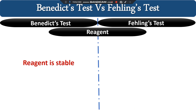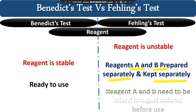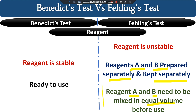Regarding reagent stability: the Benedict reagent, which contains three components, is very stable. You can prepare it, keep it at room temperature, and use it when needed. In the case of the Fehling reagent, it is unstable, so you cannot prepare and store it. Reagent A and reagent B are prepared and kept separately. Whenever you are going to use it, at the time of experiment you mix reagent A and reagent B in equal volumes. Before the experiment you must mix them to prepare the final Fehling reagent, whereas the Benedict reagent is ready to use.